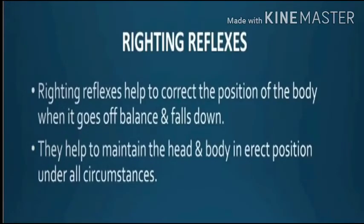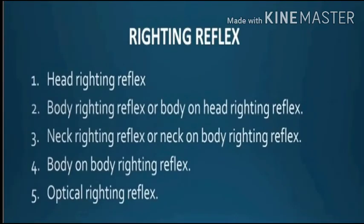Righting reflexes have their integrating centers in the midbrain. Labyrinthine righting reflex: stimulus is gravity; response brings the head to upright level; receptor is the otolith organs. Body righting reflex: stimulus is pressure on the side of the body; response is righting of the head; receptors are exteroceptors; center is the midbrain. Neck righting reflex, body-on-body righting reflex, and limb righting reflex all have centers in the midbrain. Only the optical righting reflex has its center in the cerebral cortex.